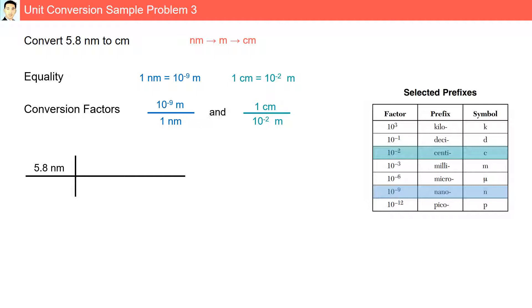Let's set it up. We are going from 5.8 nanometers to meters, and then from meters we are going to go to centimeters. Our units are going to cancel. And now we have 5.8 times 10 to the minus 9 divided by 10 to the minus 2 centimeters, which is 5.8 times 10 to the minus 7, or 0.000000058 centimeters.